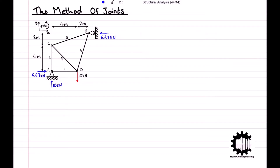Now we must select our starting node. The node we select must not have more than two connecting bars, so we could choose node A or node B. Isolating node A, we get a diagram where bars 1 and 2 have been cut. By considering the internal axial forces in bars 1 and 2, we can guarantee both parts of the structure are in equilibrium. Before determining the axial forces, we assume a sense for both — here we assume they are positive, causing tension in both bars.